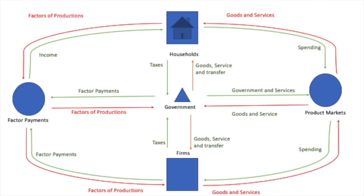Another important key element to the circular flow model is injections and leakages. Two main leakages are going to be savings — so from households when they get their paychecks and put that money into the bank, that's going to be a leakage, taking money out of the circular flow. Later we'll talk about money in reserves and how that portion of savings gets multiplied from loans, but that's for another module.